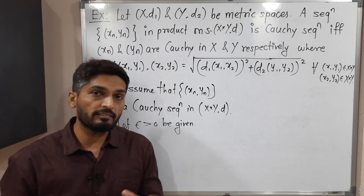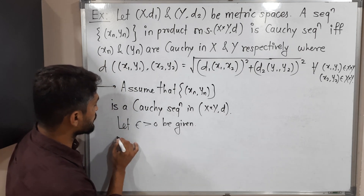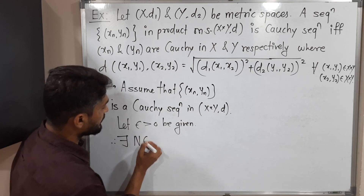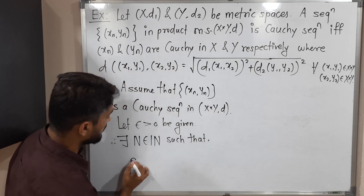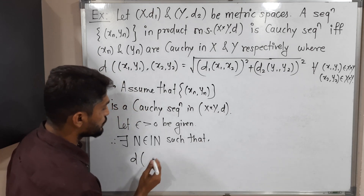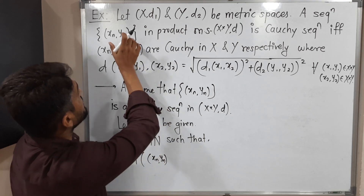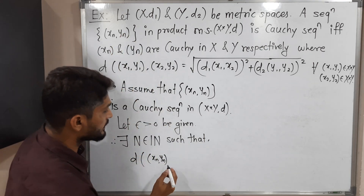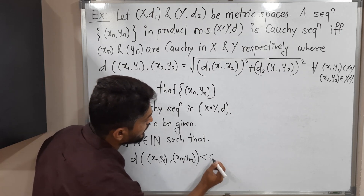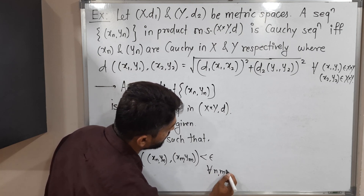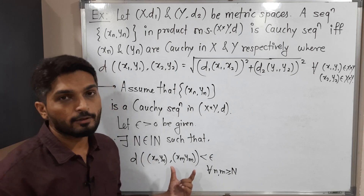Let epsilon greater than 0 be given. We have the information that (xn, yn) is a Cauchy sequence. So by definition, there exists capital N belonging to the set of natural numbers such that d of (xn, yn) and (xm, ym) is less than epsilon for all n, m greater than or equal to capital N.